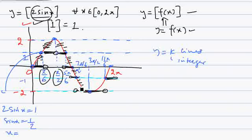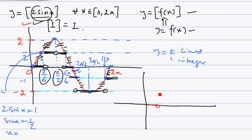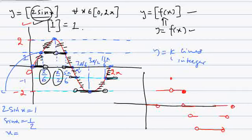These horizontal steps form the graph of y = greatest integer of 2sin(x). Looking at only the horizontal steps: the first step, then the next step, and so on. This staircase pattern is the complete graph of greatest integer of 2sin(x).